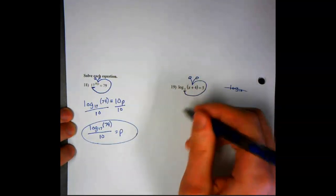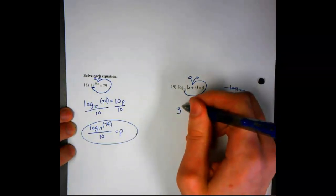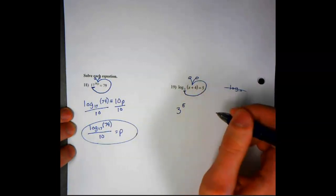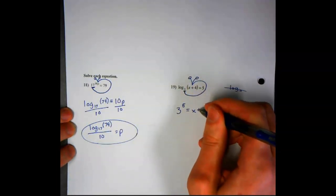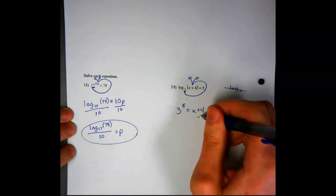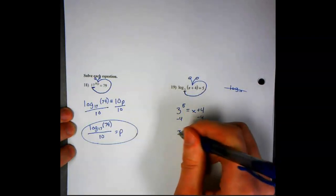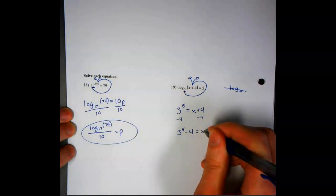So we'll start out at our base. Our base was 3. Next we go around that 5. So to the 5 is our exponent, and we're going to set it equal to where we ended. So x plus 4. The last step is just going to be subtracting that 4 from both sides. So we'll have 3 to the fifth minus 4 equals x.